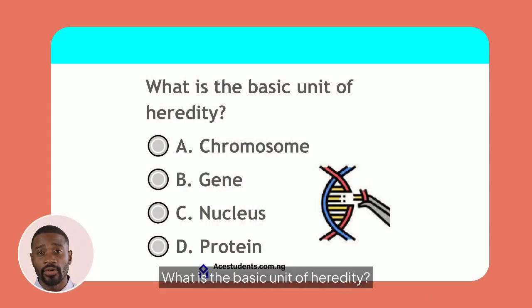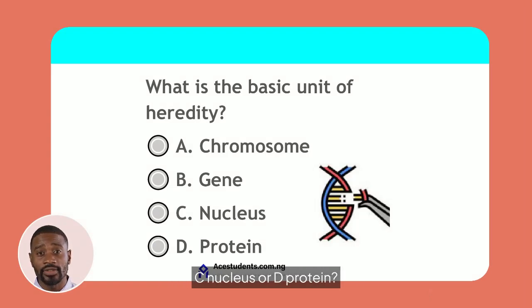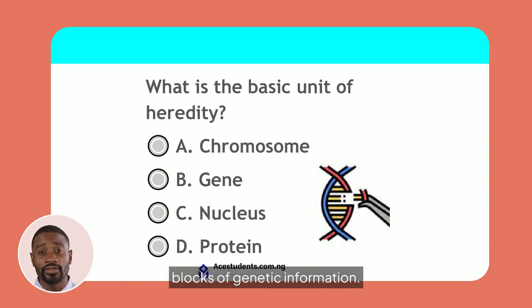Question 1. What is the basic unit of heredity? Is it A. Chromosome, B. Gene, C. Nucleus, or D. Protein? Think about the fundamental building blocks of genetic information.